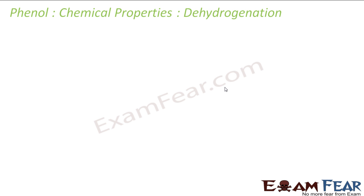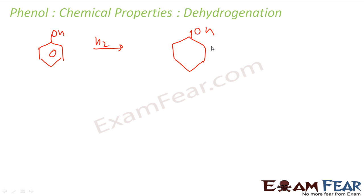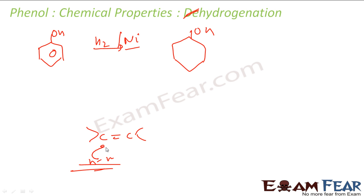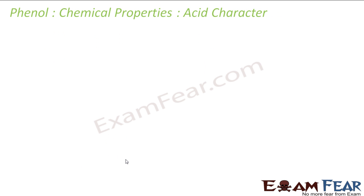The next reaction is hydrogenation. Phenol has hydrogens added to it using a nickel catalyst, which breaks the aromaticity of the ring and gives cyclohexanol. This is similar to the nickel-catalyzed hydrogenation we saw in the alkene chapter, where an alkene with a nickel catalyst and hydrogen atoms gets converted to an alkane.